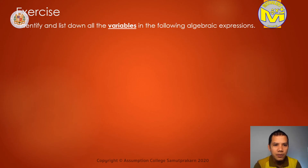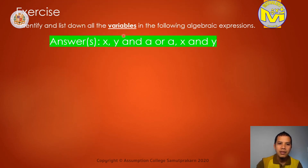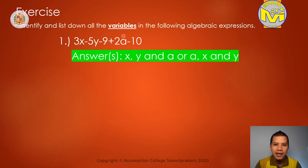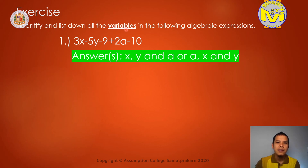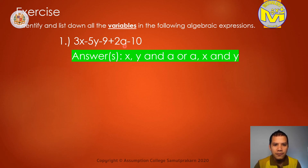This time, we will identify the variables in the same expressions. Variables in expression 1 are x, y, and a. Because the variables are letters, or symbols. Variables are symbols: x, y, and a. So in this expression, we have 3 variables — 1, 2, 3: x, y, and a.